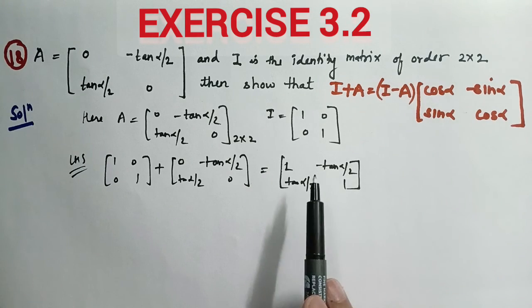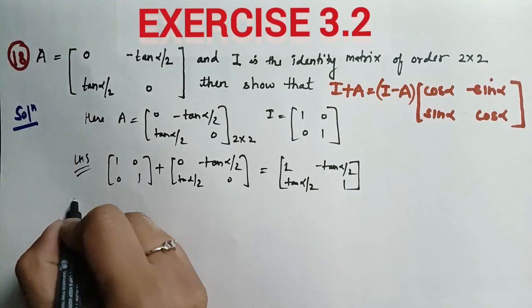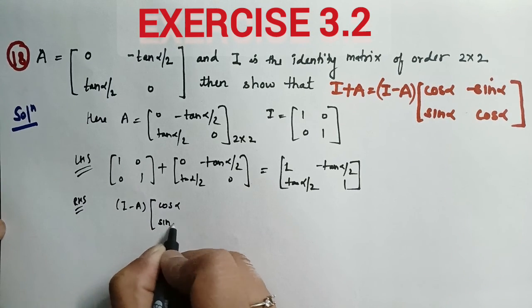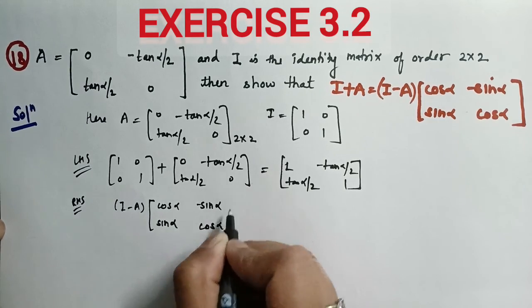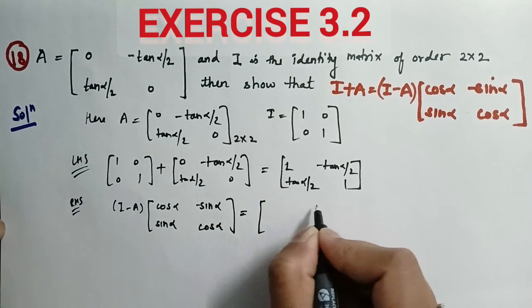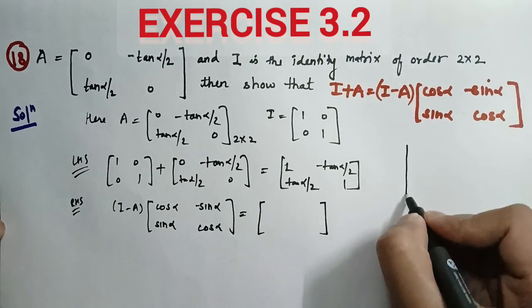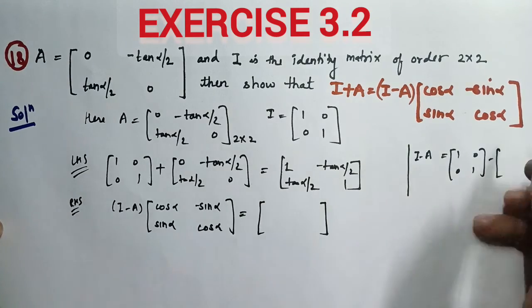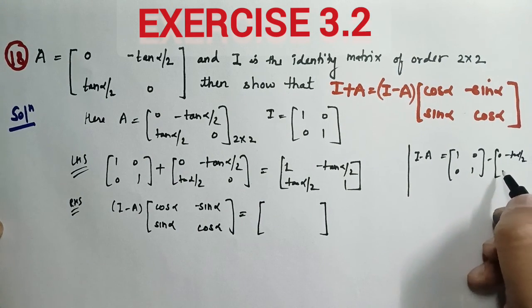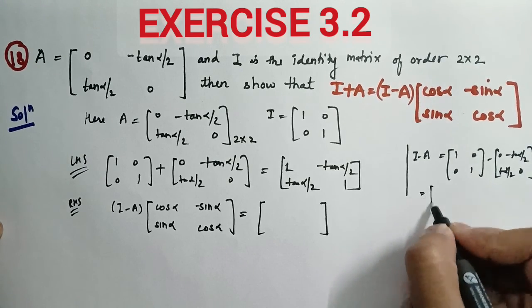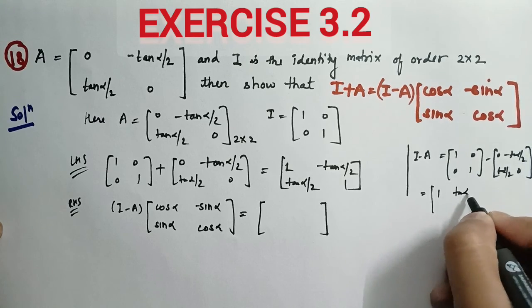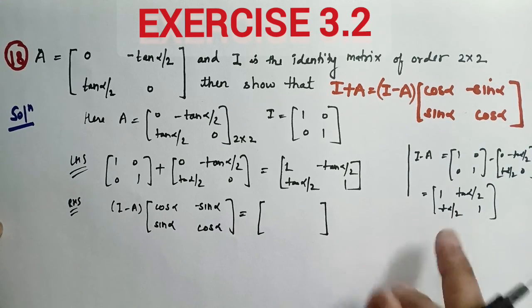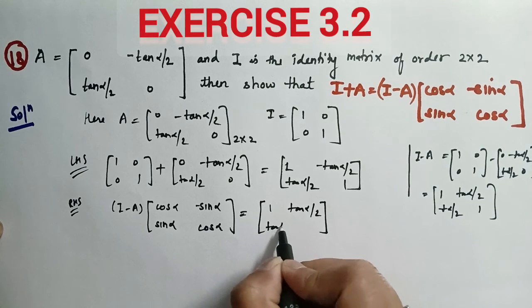Now taking RHS, we need (I - A) multiplied by the matrix [[cos α, -sin α], [sin α, cos α]]. Let's compute I - A first. I is [[1, 0], [0, 1]] minus the A matrix [[0, -tan(α/2)], [tan(α/2), 0]]. Subtracting: 1-0=1, 0-(-tan(α/2))=+tan(α/2), 0-tan(α/2)=-tan(α/2), 1-0=1. So I - A equals [[1, tan(α/2)], [-tan(α/2), 1]].